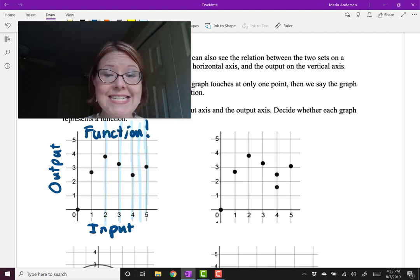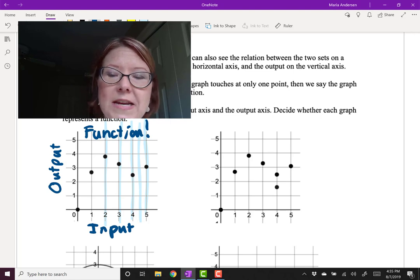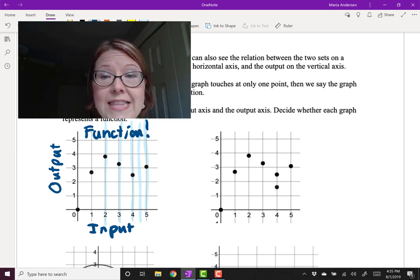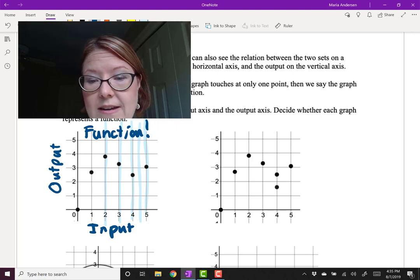The graph to the right of this one is exactly the same graph but with one additional point. Now we also have a point at 4. And if we were to do what we did on the previous page and write this as two sets, what we would see is we have a point at 0.